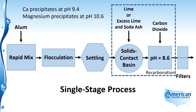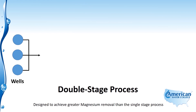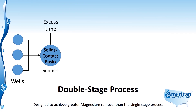Now we'll look at the double stage process. For this example, groundwater from multiple wells that is too hard is sent to a treatment plant for double stage processing. In the first stage, the water is sent to a solids contact basin where excess lime is added. Because we're trying to remove magnesium, extra lime is added to raise the pH to 10.8 — anywhere over 10.6 — to get the magnesium to precipitate out.